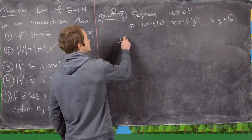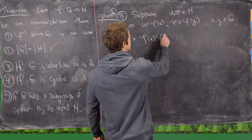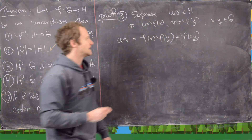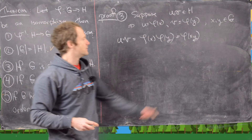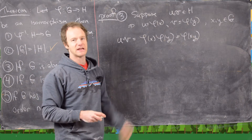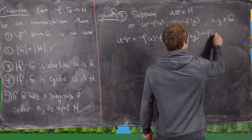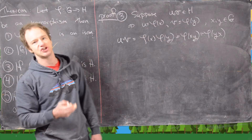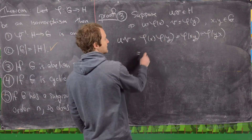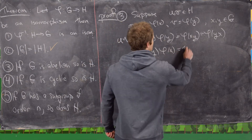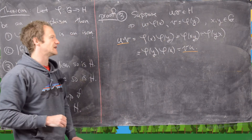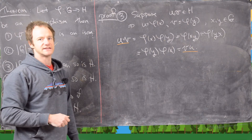Now consider UV, which equals phi(X) times phi(Y). Since phi is an isomorphism, that equals phi(XY). The multiplication inside the parentheses is happening inside G, and since G is abelian, we can commute it: this equals phi(YX). Applying the isomorphism property again, that's phi(Y) times phi(X), which equals VU. So looking at the extreme left and right hand sides, UV equals VU, which tells us that H is abelian.